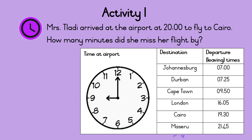Mrs. Tladi arrived at the airport at 8 to fly to Cairo. How many minutes did she miss her flight by? The flight to Cairo leaves at 7:30, which is half past 7 in the evening. Mrs. Tladi arrived at 8 o'clock in the evening, so she was 30 minutes late. She missed her flight by 30 minutes.